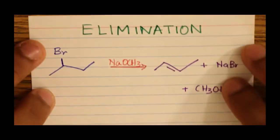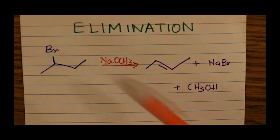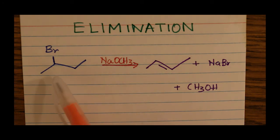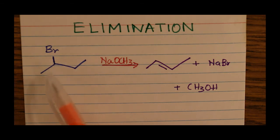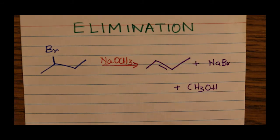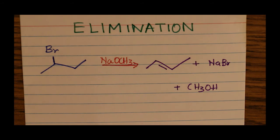Our next elimination reaction deals with a bulky base, sodium methoxide, adding across a secondary — or also tertiary — alkyl halide to give us an alkene. This is called the dehydrohalogenation of alkyl halides, specifically secondary or tertiary alkyl halides, to give us alkenes. The Br group leaves, electron density transfers to the neighboring carbons giving us the pi bond and resulting in the alkene. The other products are sodium bromide and methanol.